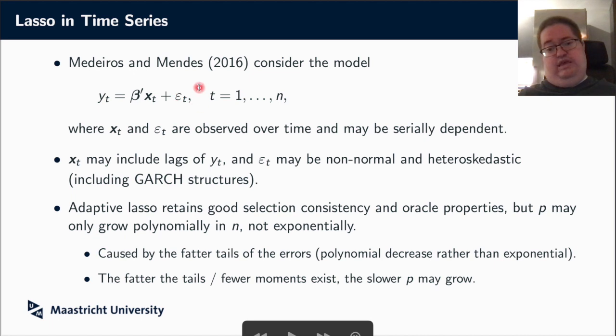So in particular, if we don't have exponential decay of the tails, but we have polynomial decay, meaning that actually not all moments exist. So you have only a limited number of moments of your epsilon. Then in that case, p may also grow only polynomially rather than almost exponentially.